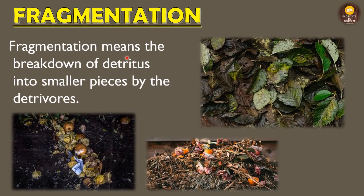The first step is fragmentation. Fragmentation means the breakdown of detritus into smaller pieces by detritivores — organisms that help in the decomposition process. Detritus can be dry leaves, peels of fruits, dry flowers, or any organic matter present around you. This step only converts organic matter into smaller pieces; it is not the full decomposition process.